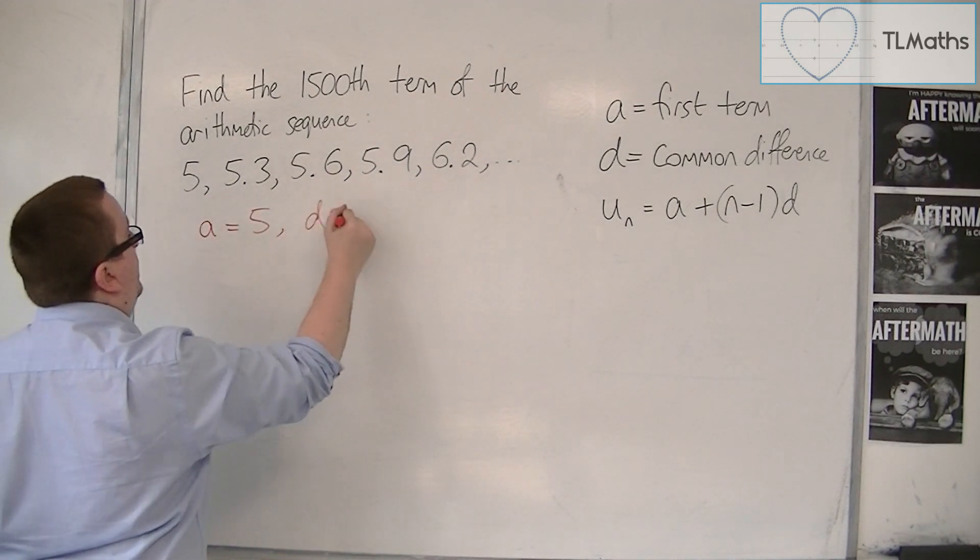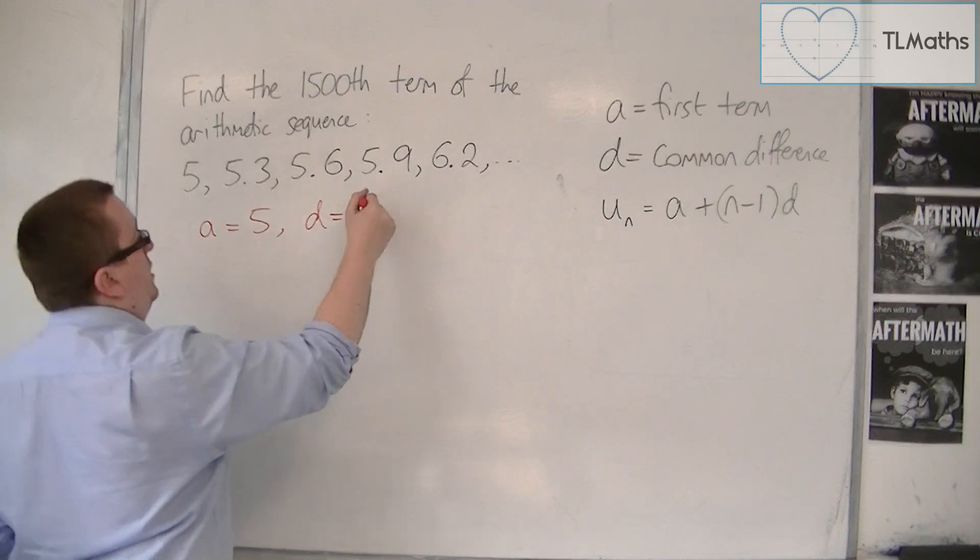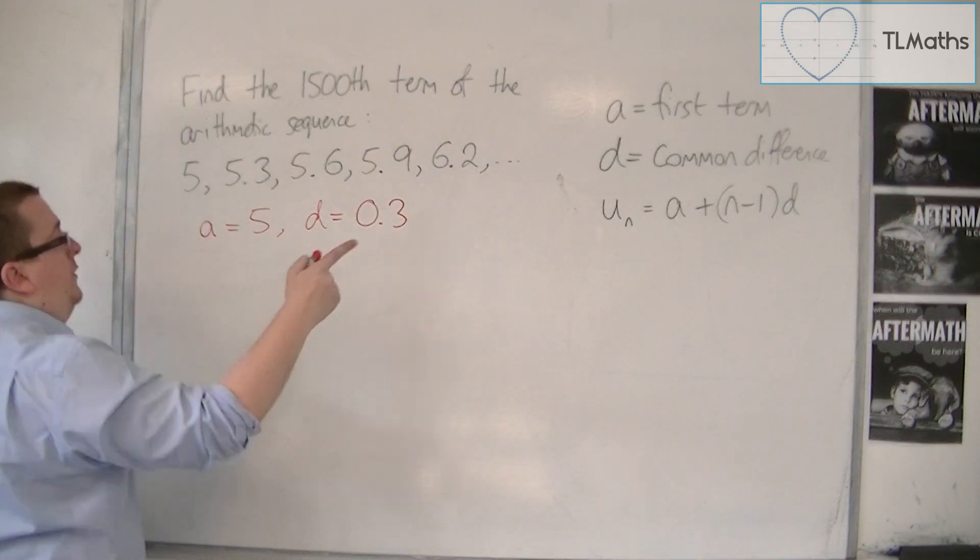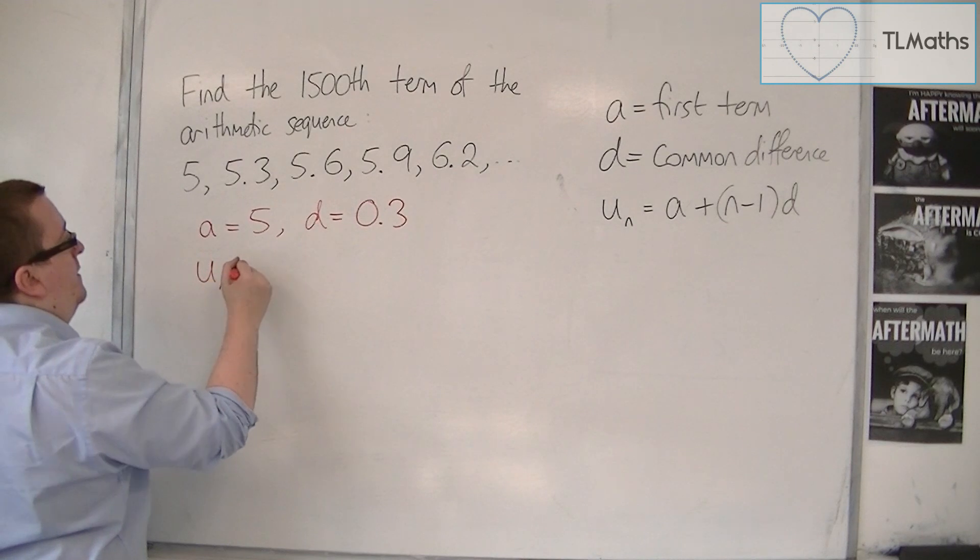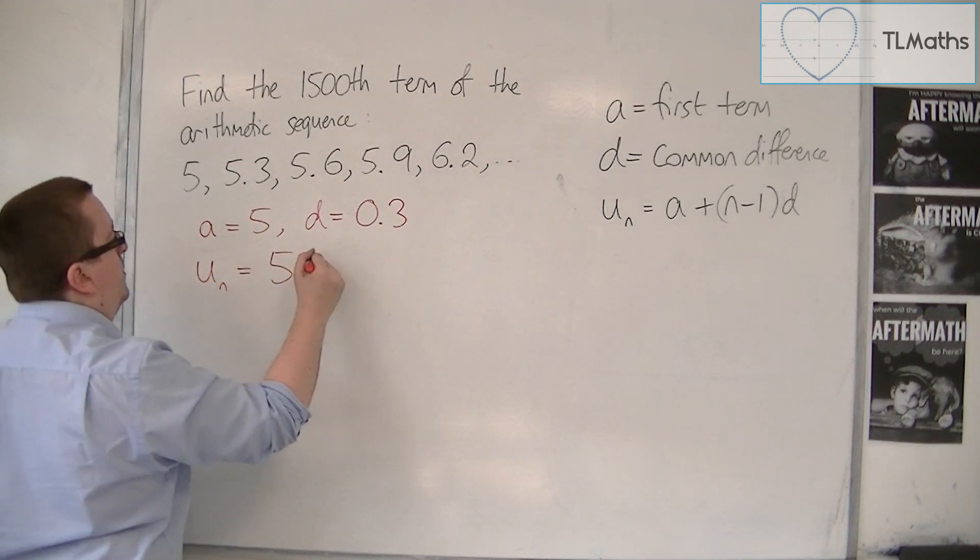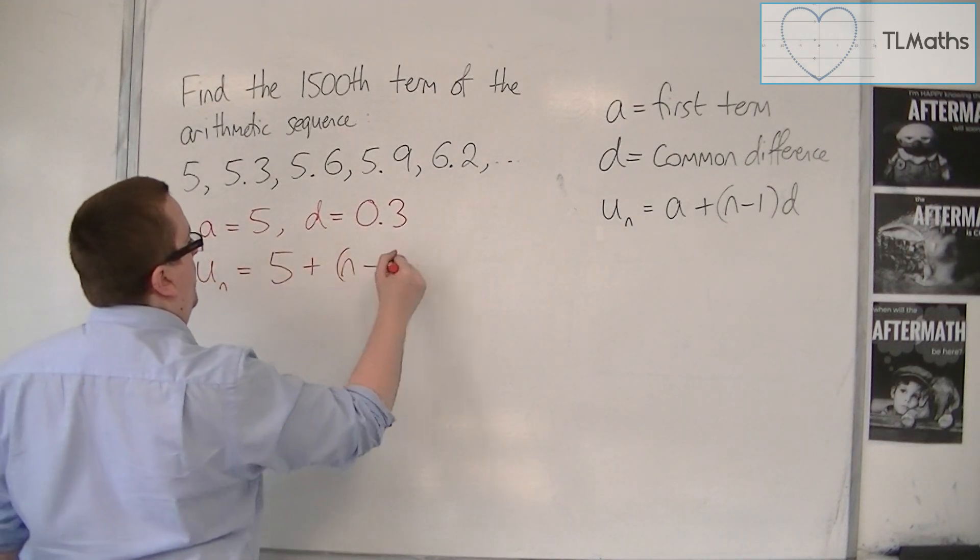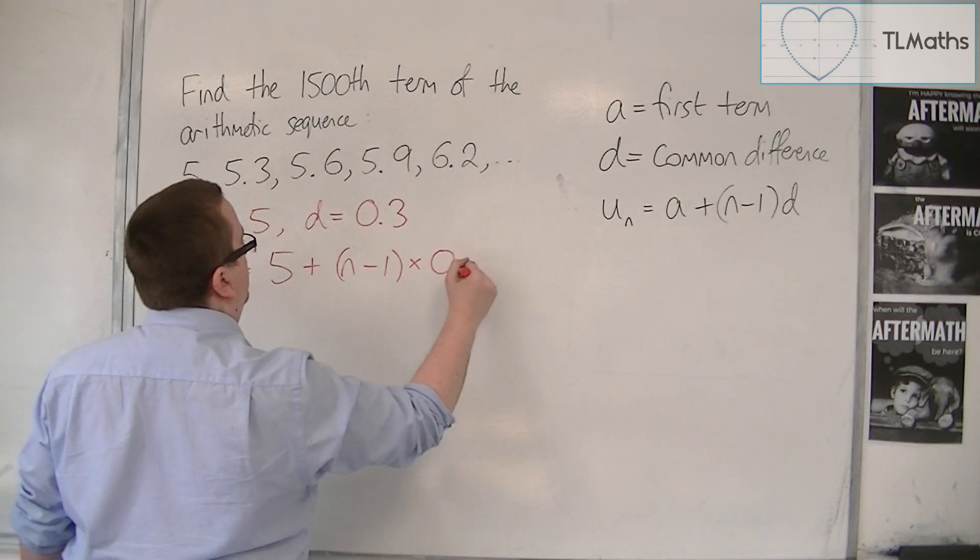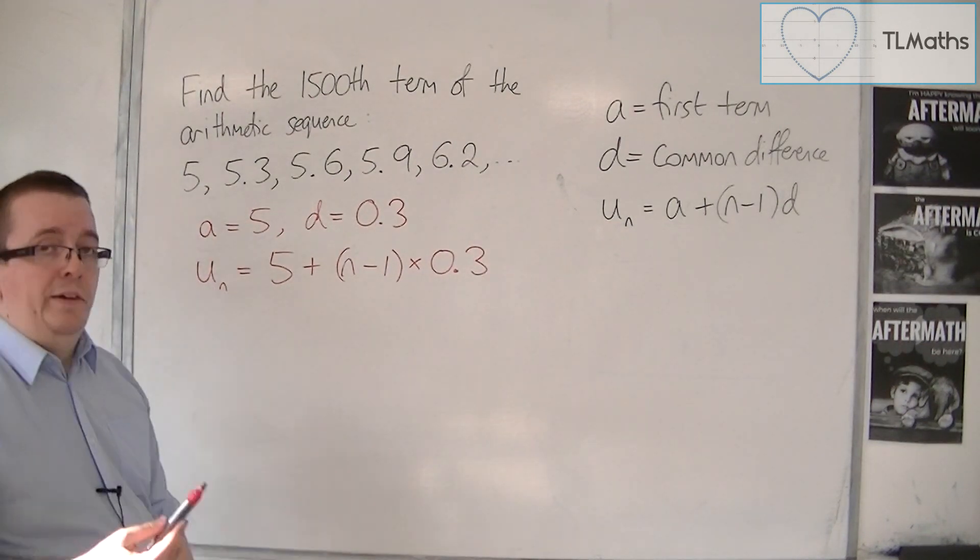The common difference, d, is what I'm adding on each time, so that's 0.3. So the nth term, un, is equal to a plus n minus 1 times d. That's my nth term.